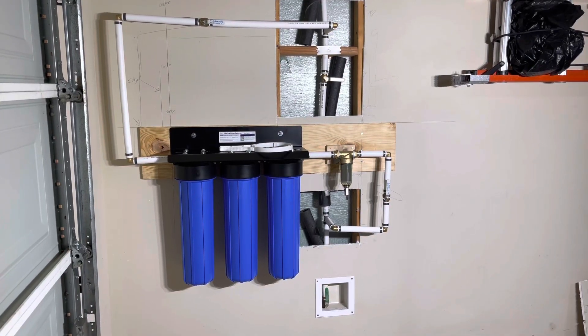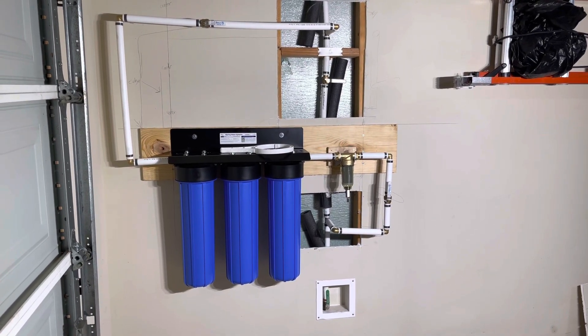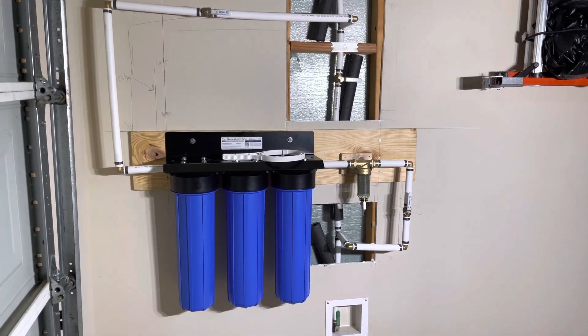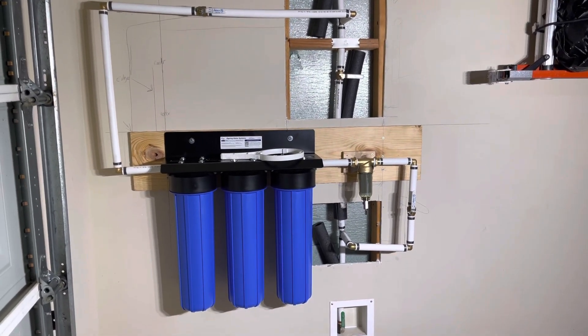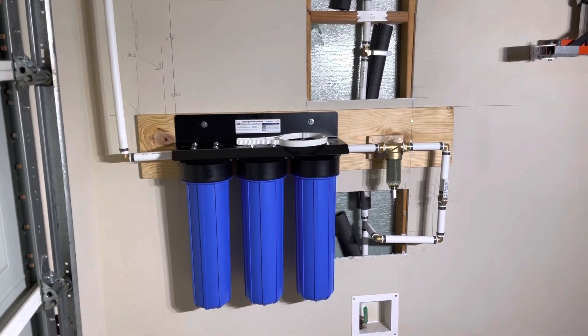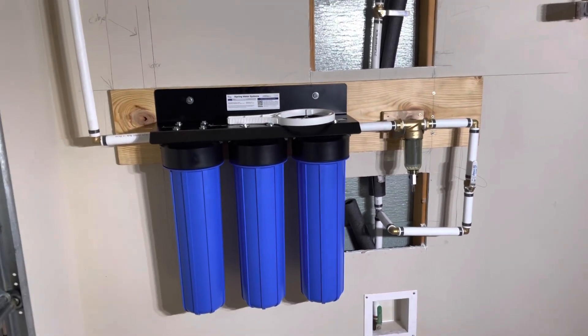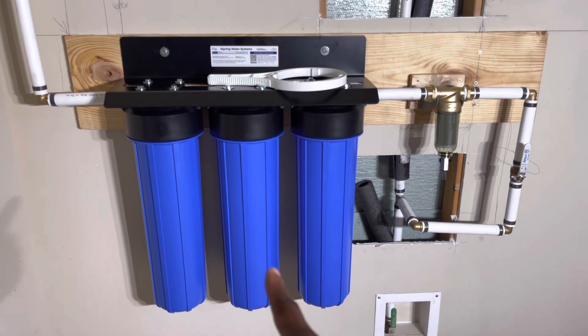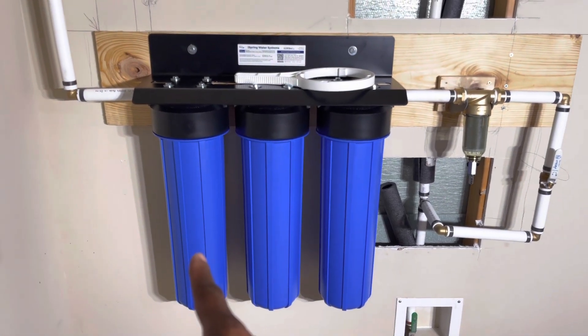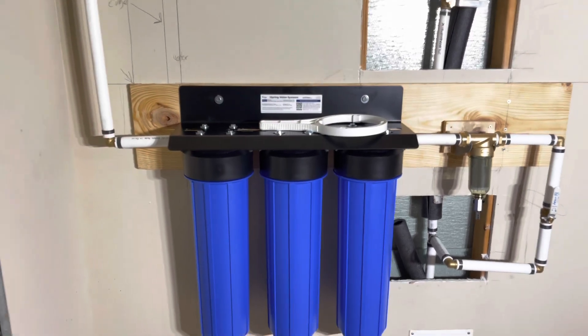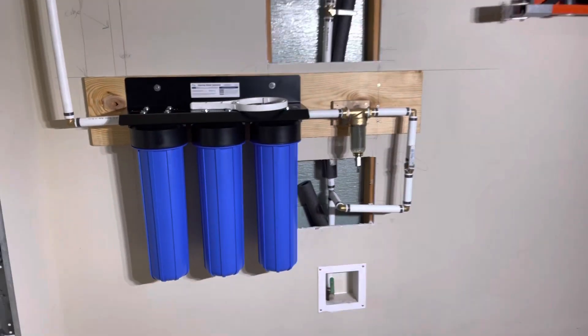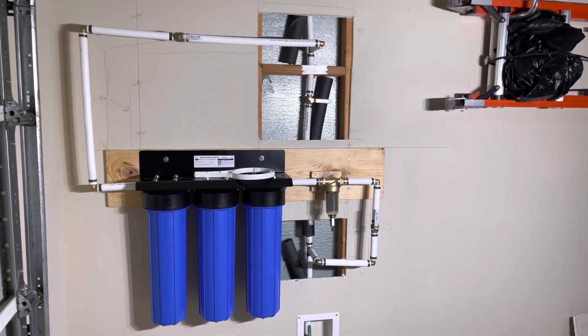Alright everyone, here's the whole house water filter system installation I did by myself. Took me about five hours. The system is the iSpring 32BM. The first filter is sediment, second is carbon, and third is iron and manganese. I'm using one-inch PEX pipe and tools I got from Amazon - the crimper tool with the go/no-go ring or guide.